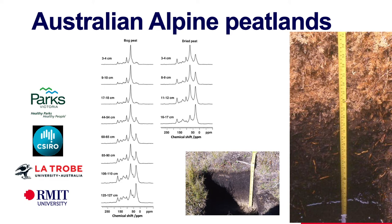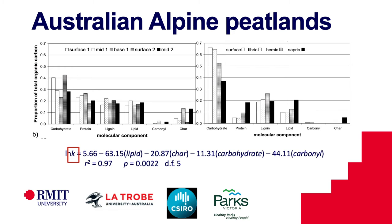This is some spectra from ¹³C NMR spectroscopy that I did with my collaborators in Jeff Baldock's lab at CSIRO in Adelaide. We used spectroscopy to look at what's going on underground — how chemical bonds are formed, which atoms are attached to other atoms — and we used that to quantify the extent of decomposition of the organic carbon that forms the peat soils. The most exciting part of this work was how the carbon chemistry and the hydrology of these systems came together analytically.